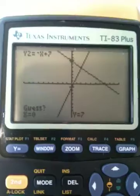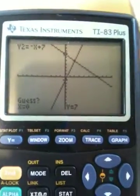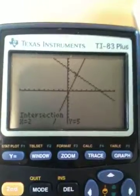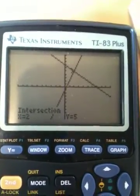And then it wants to know, should it guess at what the intersection point is? And you should say yes. So hit enter one more time. And there we go. Gives us the intersection of those two lines is where x is 2 and y is 5.